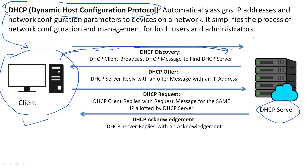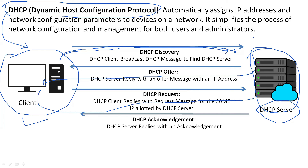The PC forwards the DHCP discovery message to the server. In response, the nearest DHCP server replies saying it is available and provides an IP address. The PC then requests that IP address, and an acknowledgement is forwarded confirming the assignment. This is the four-step DHCP process. We will study this in detail in upcoming classes.